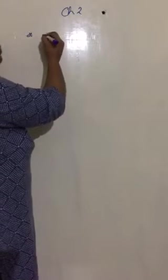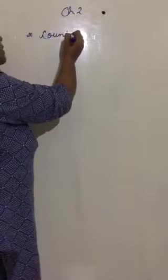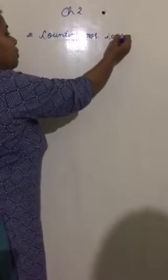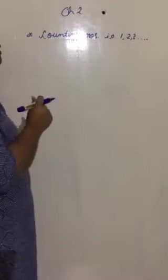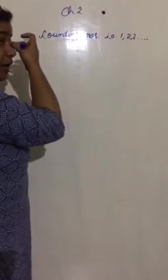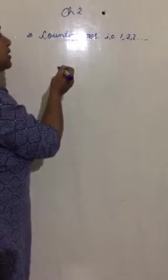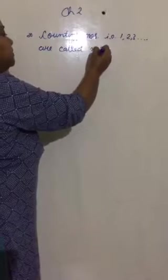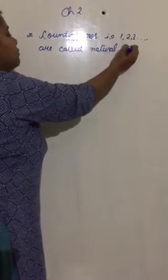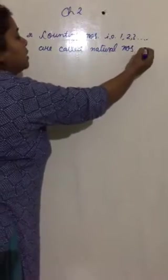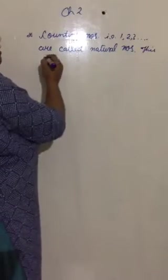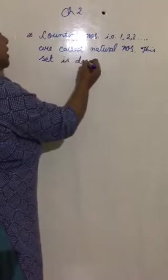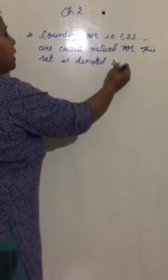Those are known as natural numbers. So, counting numbers is, that is, 1, 2, 3, 10, dot dot means it will keep on going to infinity. These numbers are called natural numbers. And this set, why am I calling it set? Because this is a group of numbers. So, this set of natural numbers is denoted by the capital alphabet N.